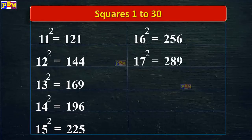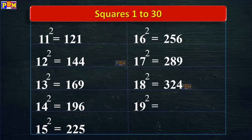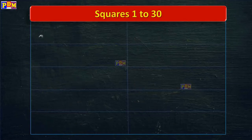18 square is equal to 324. 19 square is equal to 361. 20 square is equal to 400. 21 square is equal to 441.